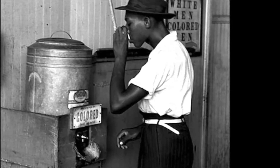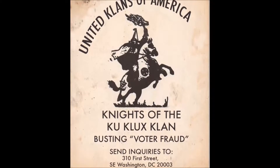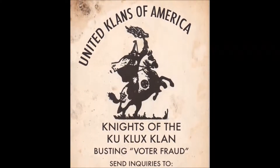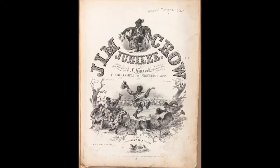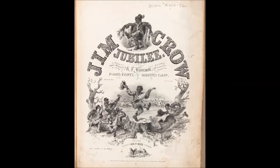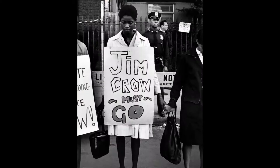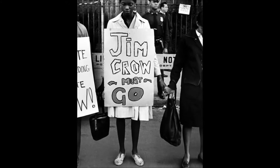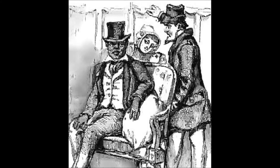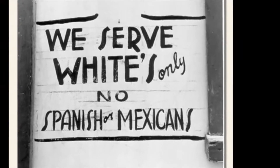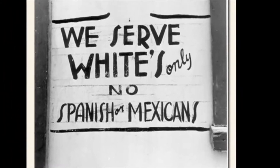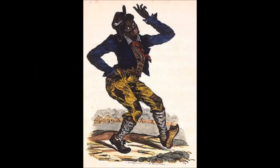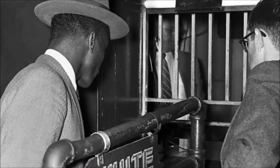In Jim Crow Guide, Stetson Kennedy describes general rules included in many of the Jim Crow laws: never assert or intimate that a white person is lying; never impute dishonorable intentions to a white person; never suggest that a white person is from an inferior class; never lay claim to or overly demonstrate superior knowledge or intelligence; never curse a white person; never laugh derisively at a white person; never comment upon the appearance of a white female. Needless to say, life in the South was dismal for African Americans.